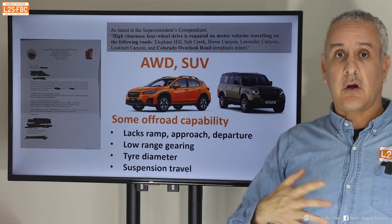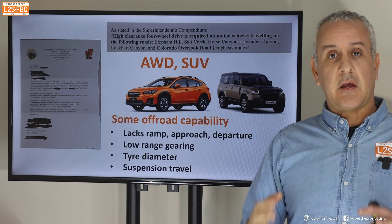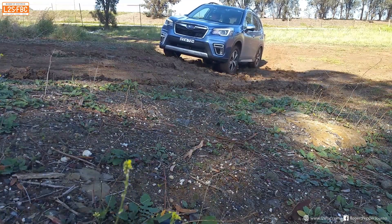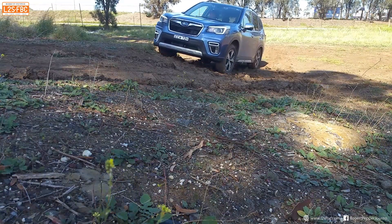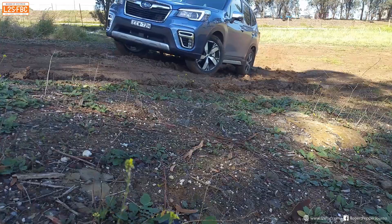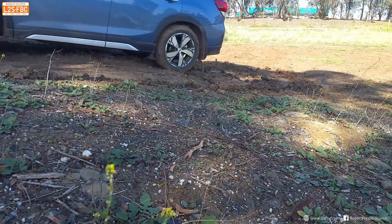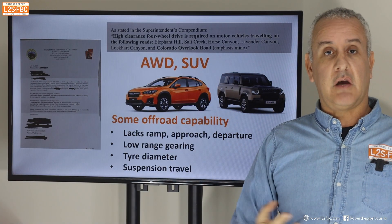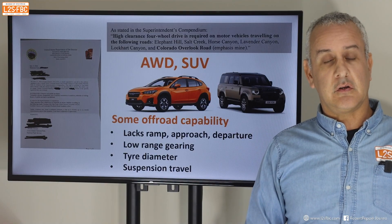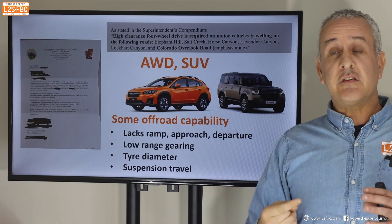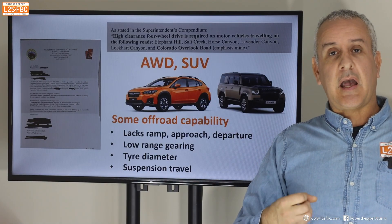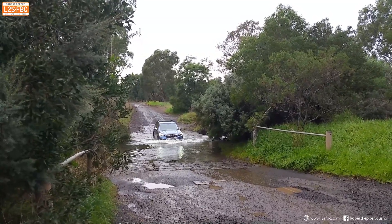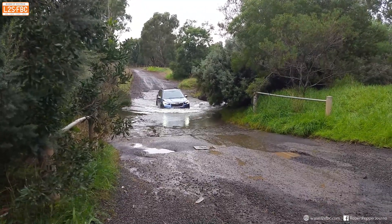What is the Subaru XV missing? Ramp-over angle, departure angle, low-range gearing, tire diameter, and suspension travel for starters. Its ground clearance is actually quite good. But that's the class of vehicle they don't want taken on those tracks. These vehicles are actually really capable, particularly when modified — there's a huge community out there.